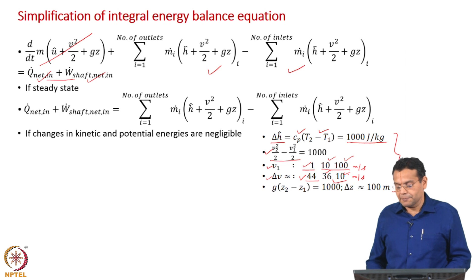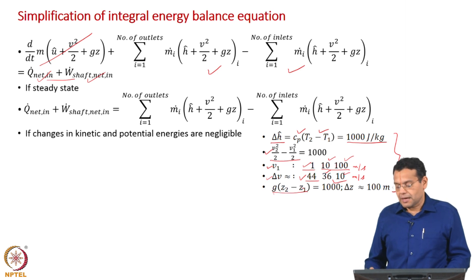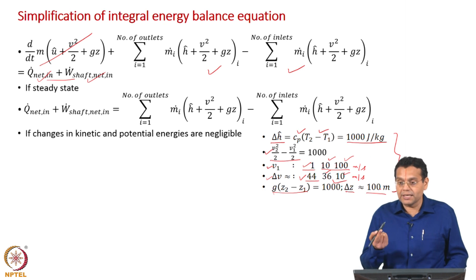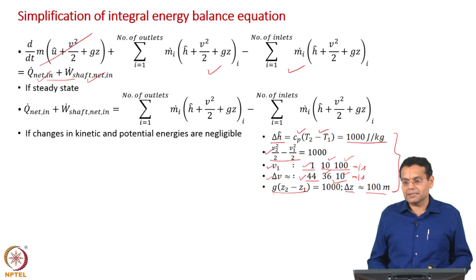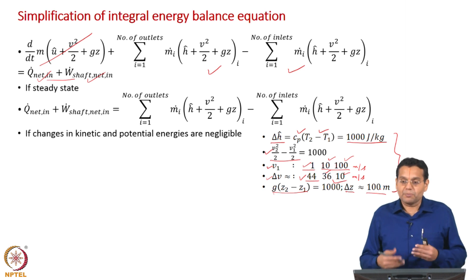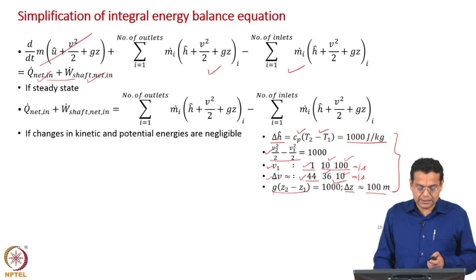For potential energy, the elevation change required for g·Δz = 1000 J/kg gives Δz ≈ 100 meters. That is far too large a height for typical process equipment, especially since that calculation was for just 1°C temperature change — real temperature changes are larger. Therefore, potential energy changes are also negligible.